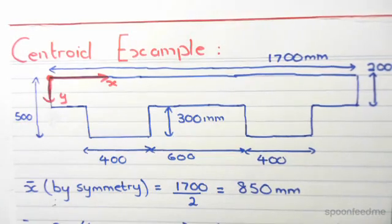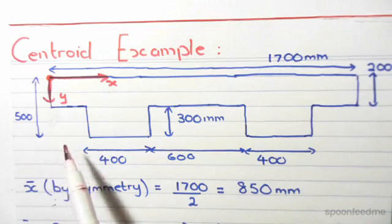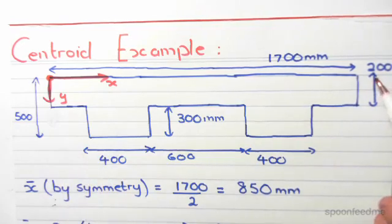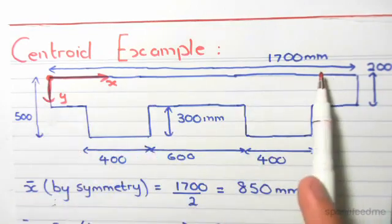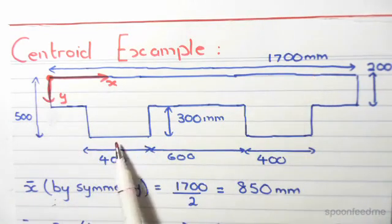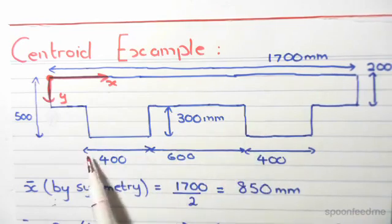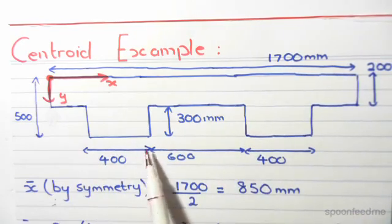Here I present to you a second example of centroids. We just considered this band beam. The top element has a thickness of 200 millimeters and the length of 1700 millimeters. These bottom two legs have a length of 400 millimeters.